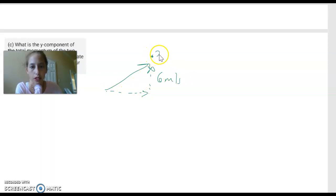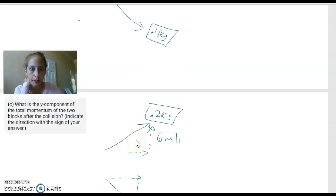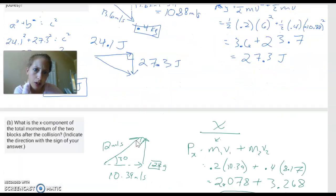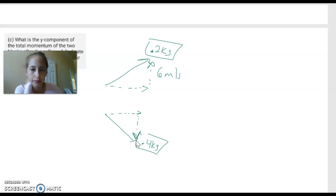This is the 0.2 kilogram block. We have the 0.4 kilogram block. It's got over and down. So one's going up, one's going down. How much down? 10.88 meters per second. Oh my goodness.